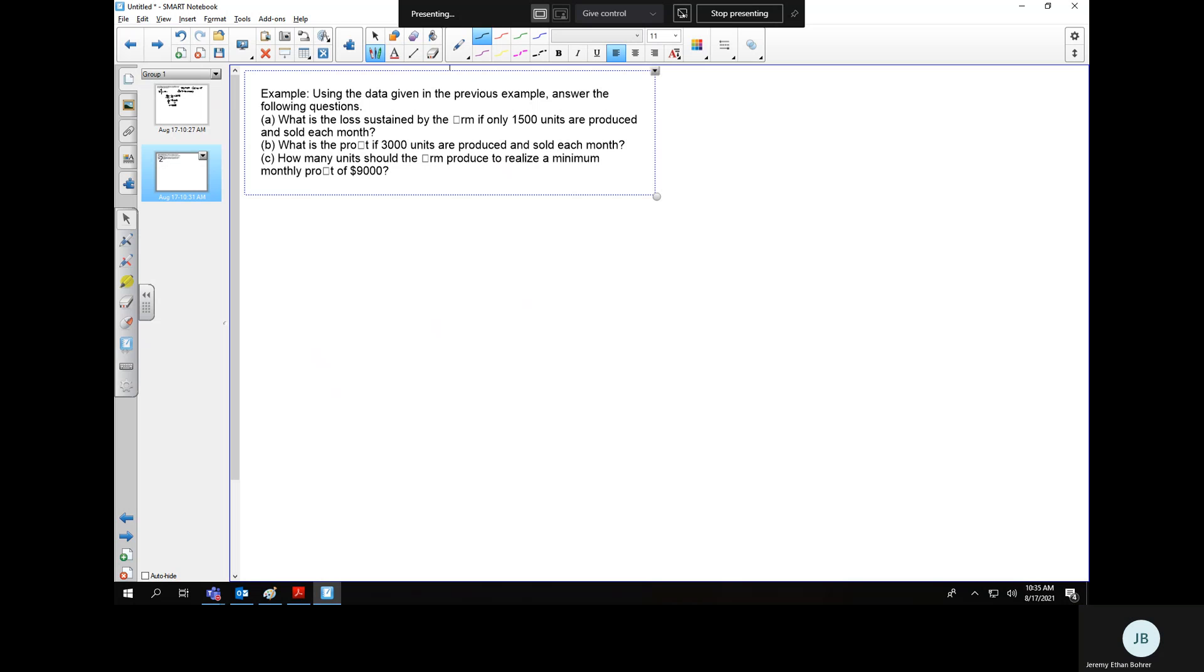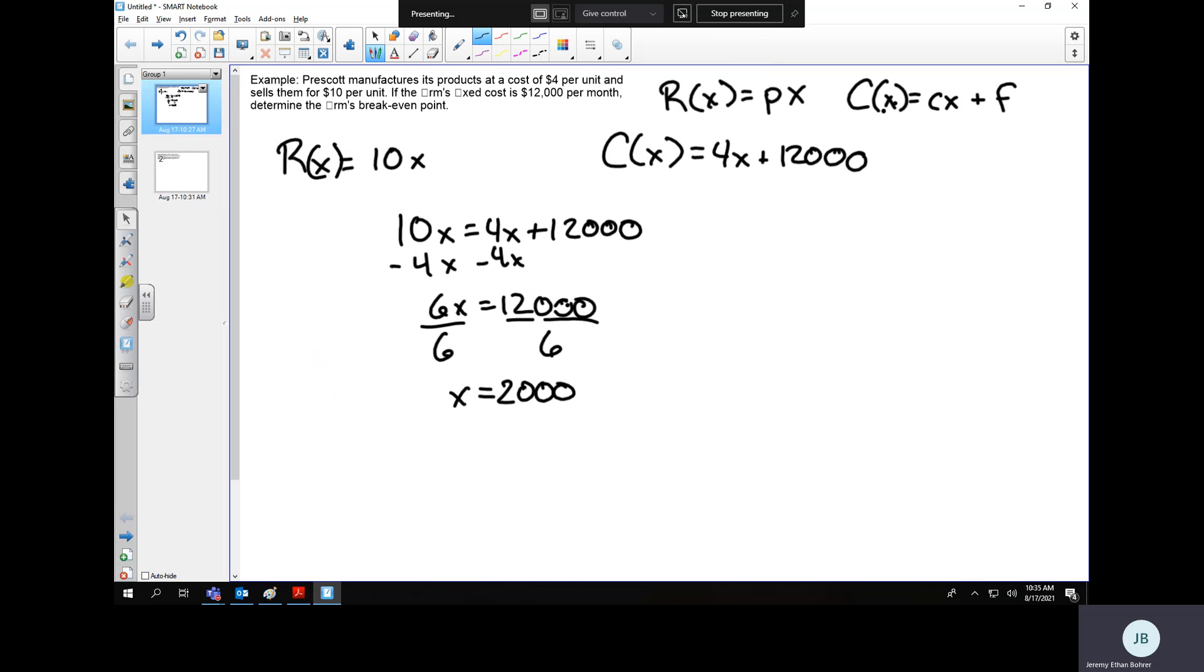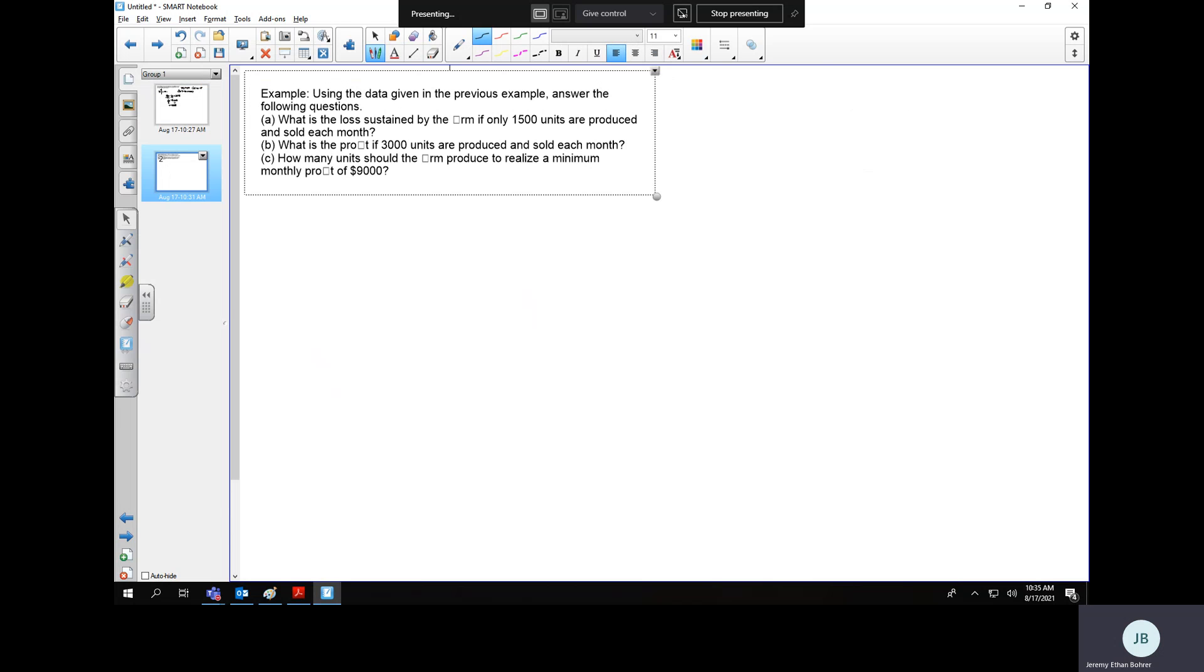I can do this. I say that X is 1,500. I go back and I look at my R of X and C of X, 10X and 4X plus 12,000. For this we can set up a profit function. This is going to be the easiest thing to do.